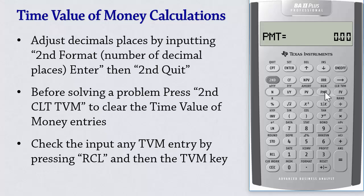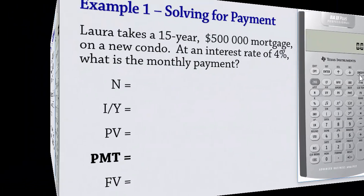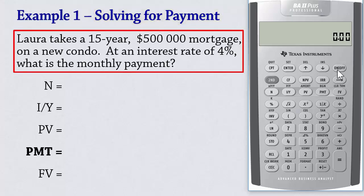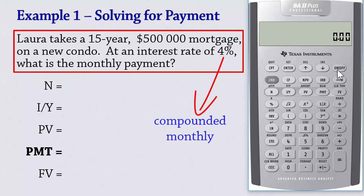So let's look at the first example: solving for Payment. Laura takes a 15-year $500,000 mortgage on a new condo at an interest rate of 4% compounded monthly. What is the monthly payment?